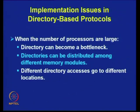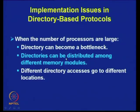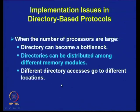Some implementation issues in directory-based protocols: when the number of processors is large, the directory becomes a bottleneck because its size is proportional to the number of blocks times the number of processors. To address this, directories can be distributed among different memory modules so that different directory accesses go to different locations, leading to lesser traffic on any particular bus.